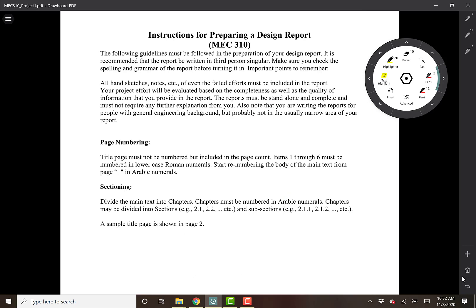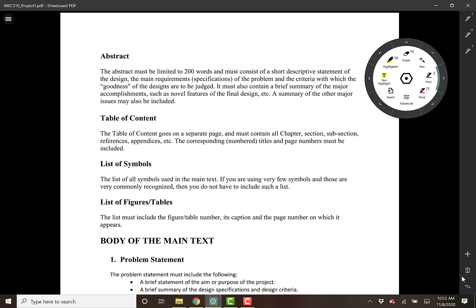You should follow this template closely but you can make modifications if it fits your narrative. So the order in which the items should appear is shown here. You should first have the abstract, then the table of contents, list of symbols, list of figures and tables and then the body of the main text which is divided into five chapters.